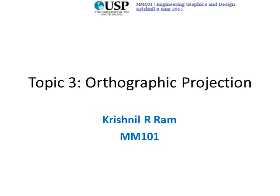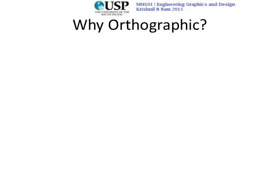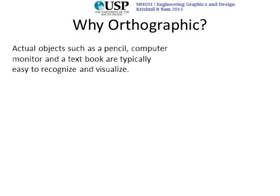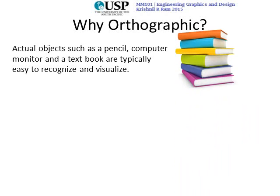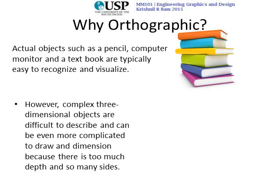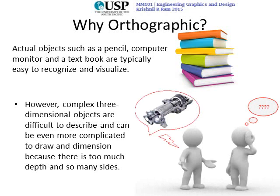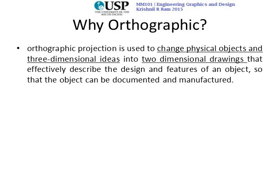Welcome to topic three: orthographic projection. Let's look at why we need it. Actual objects such as a pencil, a computer monitor, and a textbook are typically very easy to recognize — you see a book and can easily describe it to someone else. Whereas complex three-dimensional objects are difficult to describe and even more complicated to draw and dimension, because there are so many sides and so much depth. As you can see in this cartoon, this person is trying to explain to the other person what a gas turbine looks like.